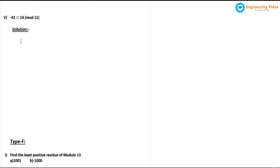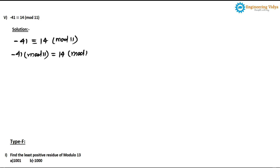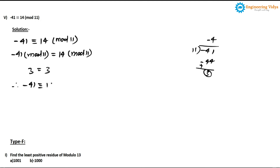In the last type E problem, we prove -41 ≡ 14 (mod 11). Writing: (-41) mod 11 = 14 mod 11. For (-41) mod 11: 11 goes 4 times giving 44, so -44, remainder is 3. The right-hand side: 14 mod 11 = 3. Since 3 = 3, the statement -41 ≡ 14 (mod 11) is true and hence proved. We have now completed all type E problems.